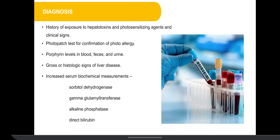Moving on to diagnosis — history and clinical findings fortified with liver function tests help in formulating the diagnosis. Photopatch test can be used for confirmation of photoallergy. Also, porphyrin levels in blood, feces and urine can be examined. Gross or histologic signs of liver disease may indicate photosensitization. Increased serum biochemical measurements can be taken of sorbitol dehydrogenase, gamma glutamyl transferase, alkaline phosphatase and direct bilirubin.